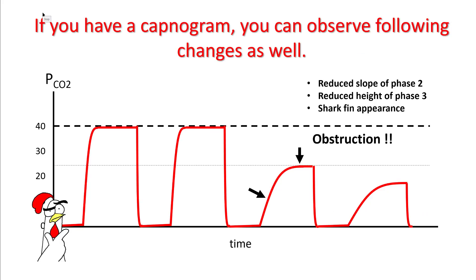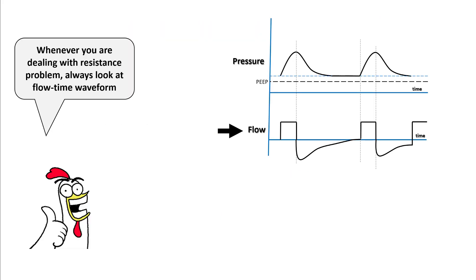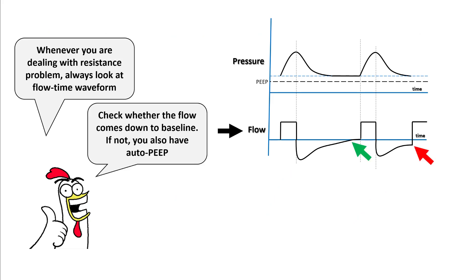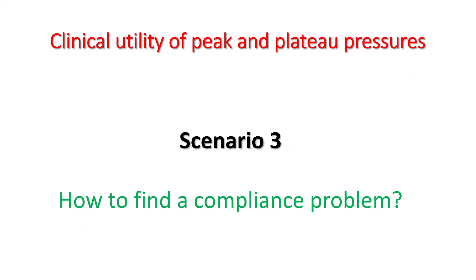If a capnogram is available, look for a reduction in the slope of phases 2 and 3, giving the capnogram a shark-fin appearance. When dealing with resistance, always look at the flow waveform and check whether flows are returning to baseline. If the flow waveform is not returning to baseline, you are likely also dealing with auto-PEEP.